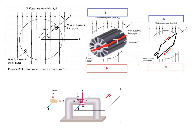We will use the right-hand rule to find force directions. The magnetic field goes from north to south. Point all four fingers in the direction of the magnetic field, point your thumb in the direction of the current — thumb pointing out of the page — and your palm gives the force direction. This is very important to understand.